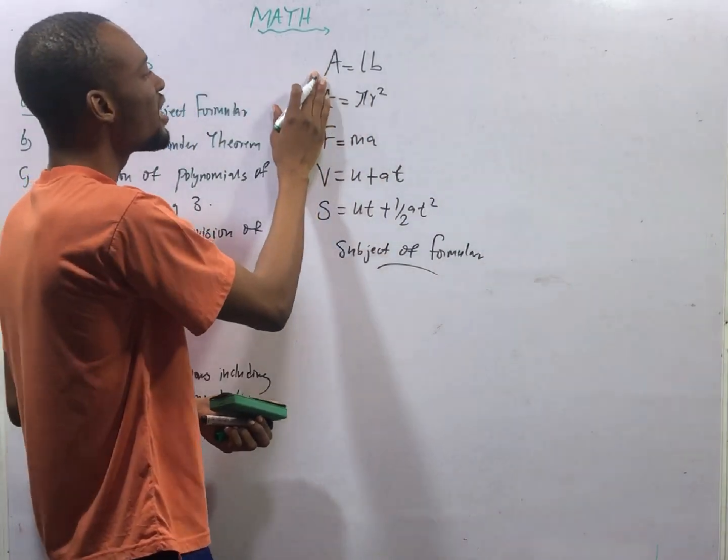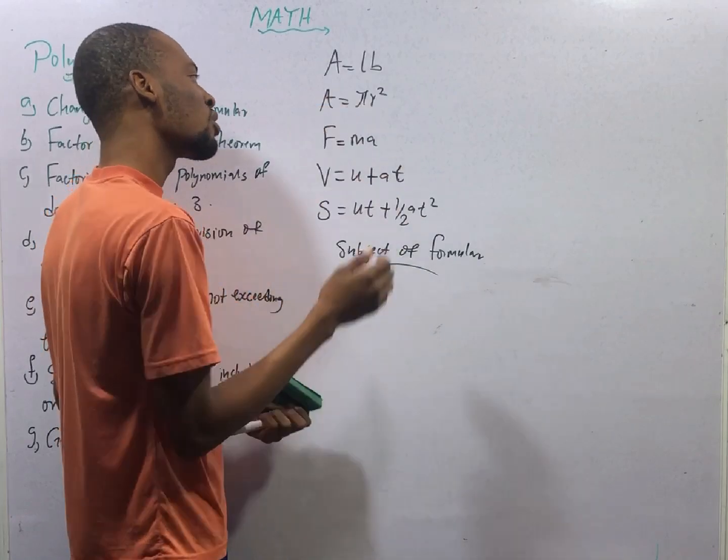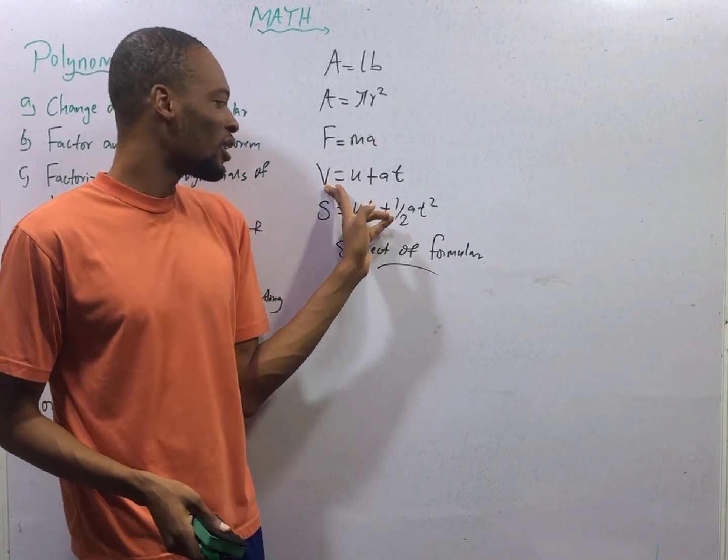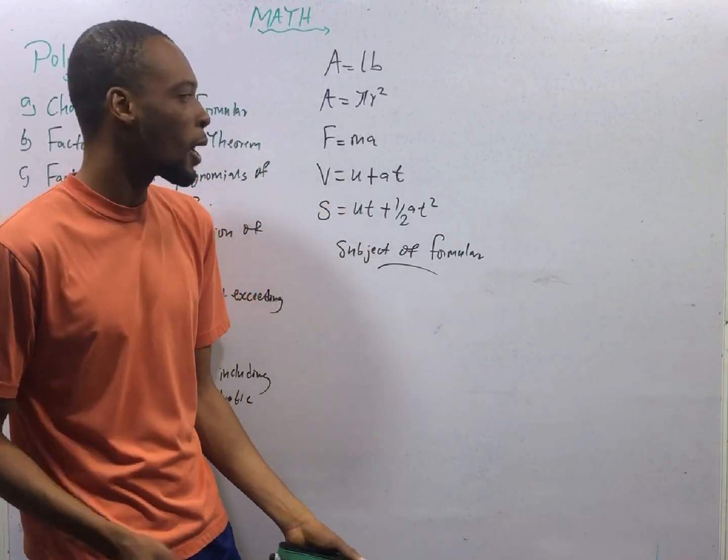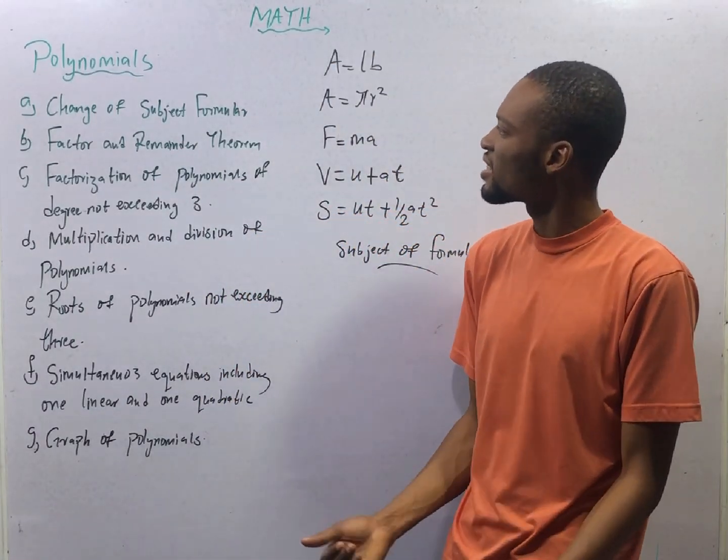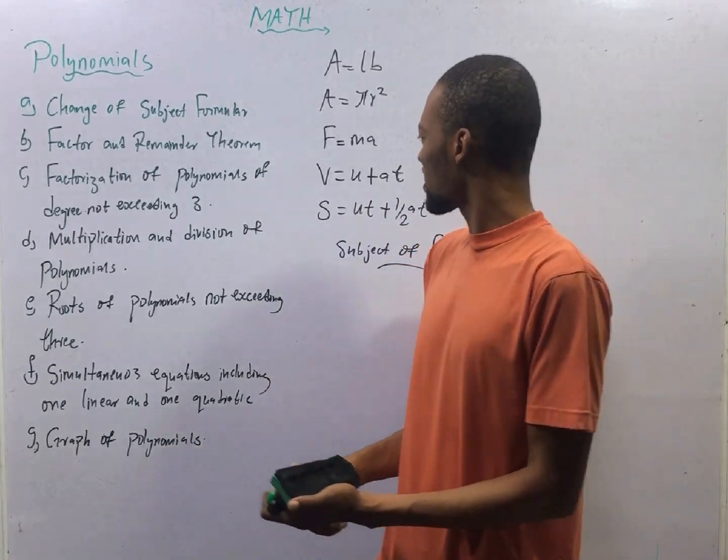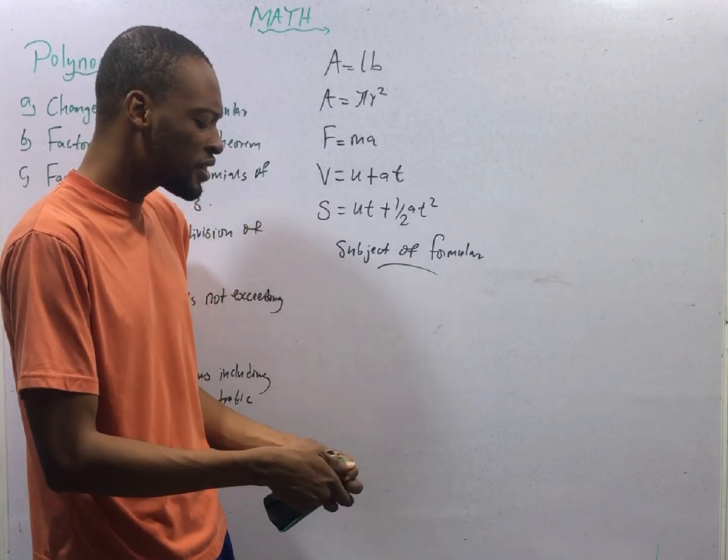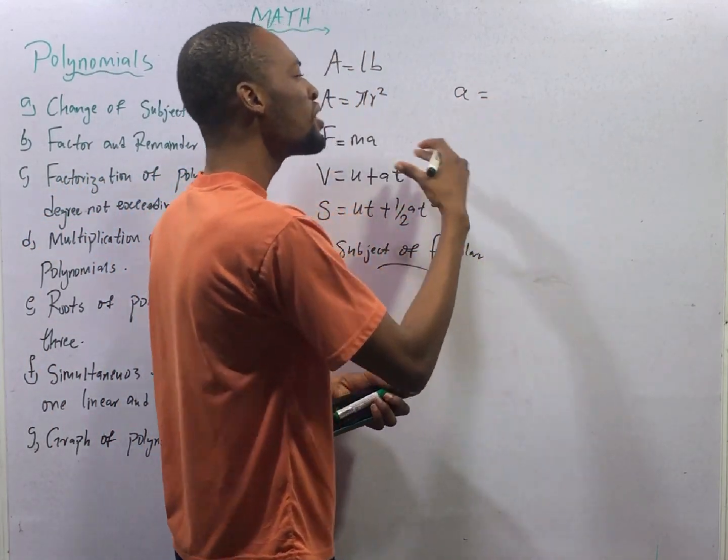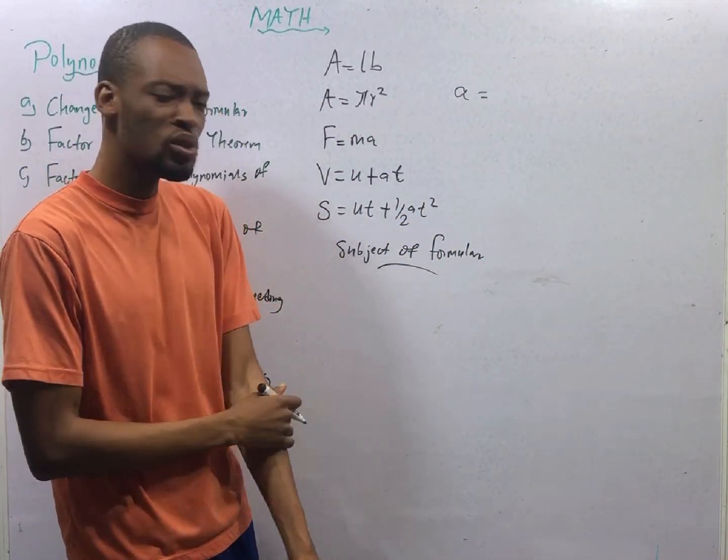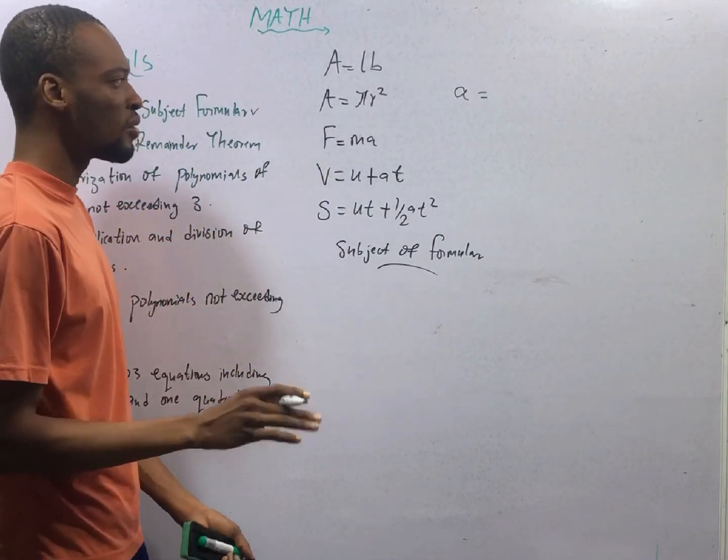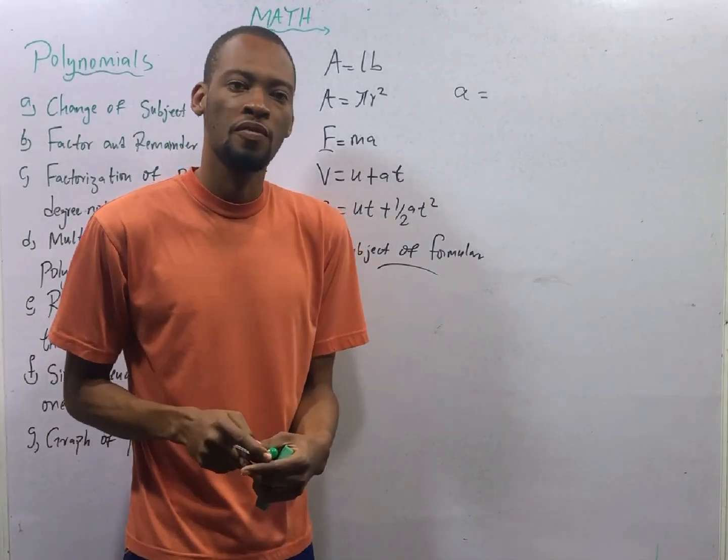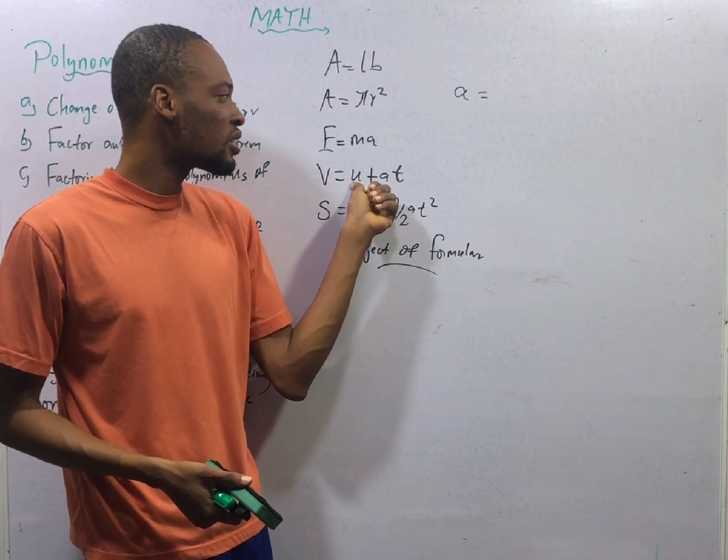F is the subject formula. In this case, A is the subject formula. For calculations, there are cases where we need to change subject formula. If you know that force is mass times acceleration and I tell you to find acceleration, you need to do everything possible so that acceleration will stand alone and be equal to every other thing. It becomes the subject. If you are doing that, you are doing what you refer to as change of subject formula, because the original subject formula here is F. If you are changing it to A, you are changing the subject of the formula.